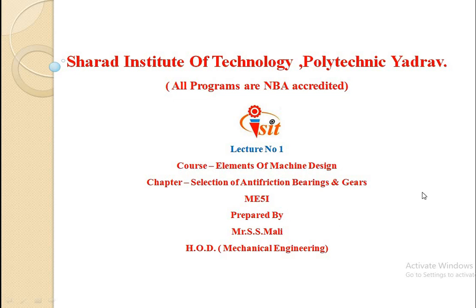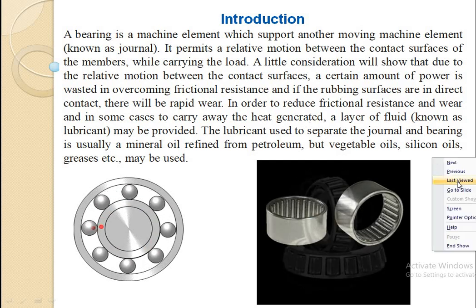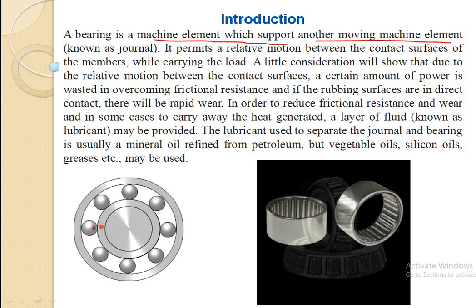Let's start with the definition of a bearing. A bearing is a machine element which supports another moving machine element. In simple language, it is an element used for supporting purposes for another moving machine element, which is known as the journal. Keep in mind the term journal — it is the moving member in a bearing. The bearing permits relative motion between the contact surfaces of the members while carrying the load.